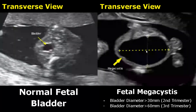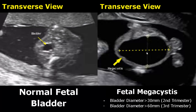Here we have a transverse view showing fetal megacystis. In the second trimester, the bladder diameter will exceed 30 millimeters in the case of megacystis, and in the third trimester it will exceed 60 millimeters.